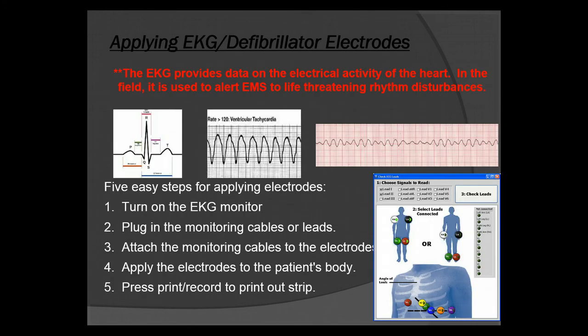Now we're going to look at applying EKG defibrillator electrodes. In the field, the EKG provides data on electrical activity in the heart and is used to alert EMS to life-threatening rhythm disturbances. You might see a normal textbook heartbeat, ventricular tachycardia — a very dangerous rhythm — or ventricular fibrillation on the right, which is a lethal dysrhythmia that needs to be treated immediately.